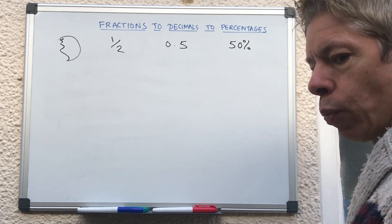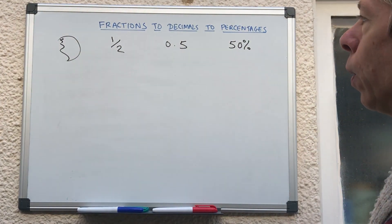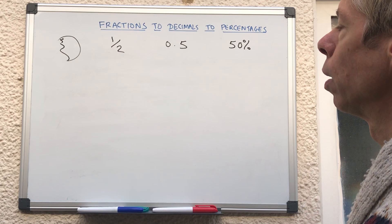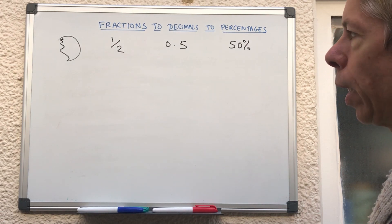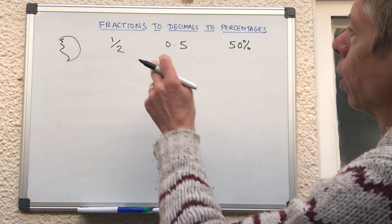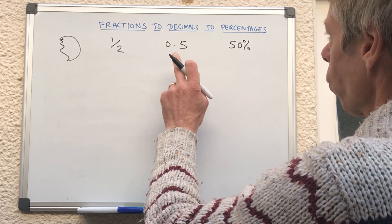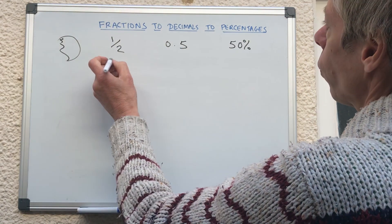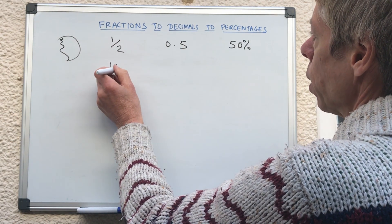So they're all talking about how much have we got of a certain thing. So how do we convert between them? Well there's a classic question, what is a half? 0.5. Then what is a quarter?